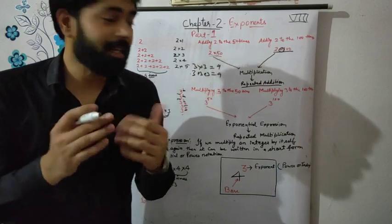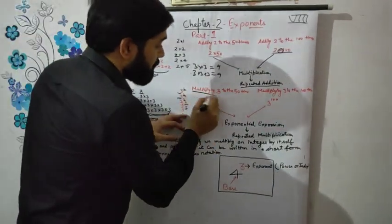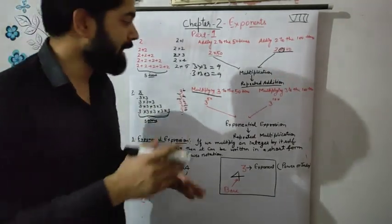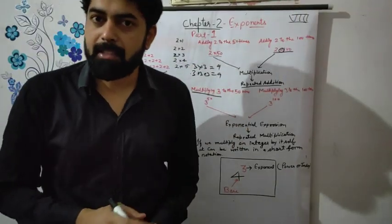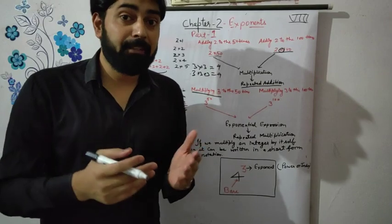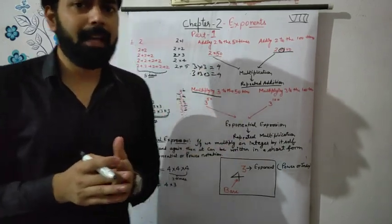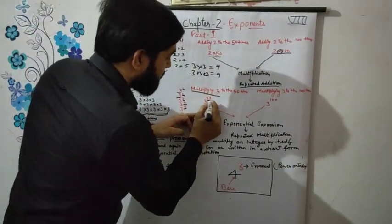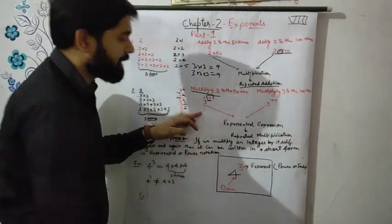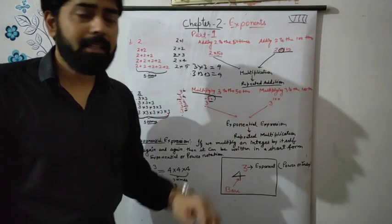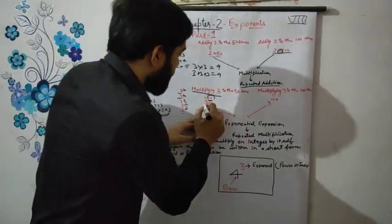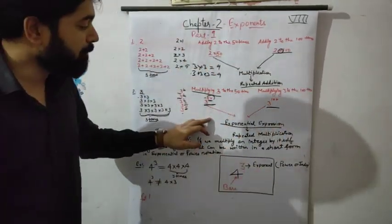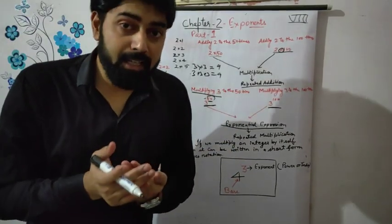You also studied exponents in class 7 and most students know well what exponents are and how to solve them. But suppose 3 is multiplied 50 times — we cannot write 3×3×3... fifty times. That is a very big problem. Suppose 3 is multiplied 100 or 1000 times — we cannot write in multiplication form. So we write 3 with superscript 50, or superscript 100. This type of notation is known as exponential form, which means repeated multiplication.